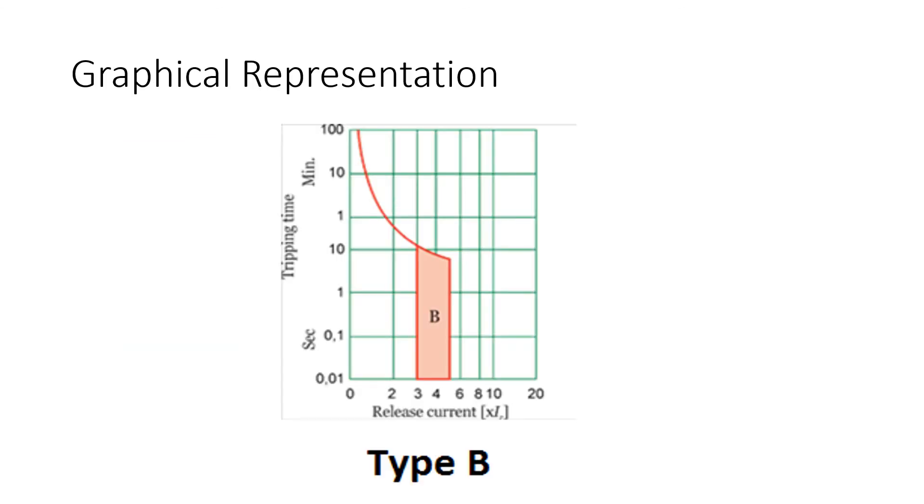After plotting the graph you will find such type of nature inverse characteristic and that is of type B in which it operates if your rated value varies from 3 times to that of 5 times. This is how MCB testing is carried out.